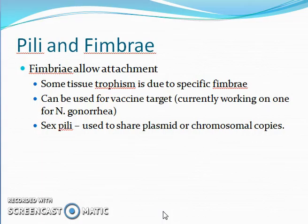Fimbriae can be used as a vaccine target. There is currently work on a vaccine for Neisseria gonorrhoeae, which causes gonorrhea, using the fimbriae as a focal point. Since fimbriae are necessary for attachment to the urinary and reproductive tract, if antibodies can be developed to attack those regions, they may be able to prevent attachment of Neisseria gonorrhoeae to those tissues.